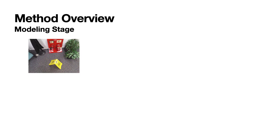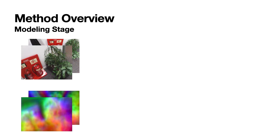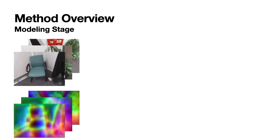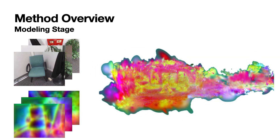In the modeling stage, we first extract keypoint features from the input images. These features are then utilized to build a 3D Gaussian splatting scene representation, incorporating a distilled feature field.